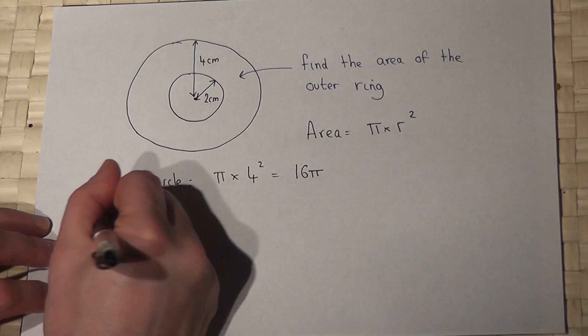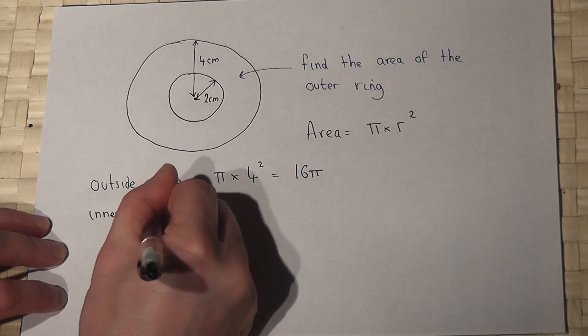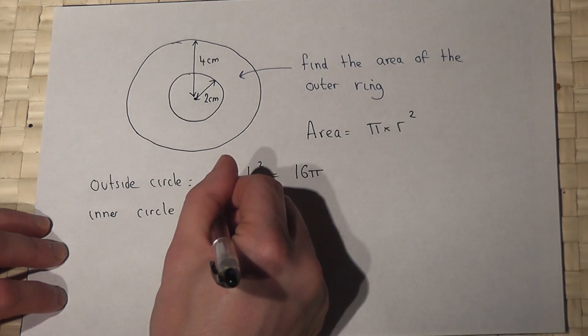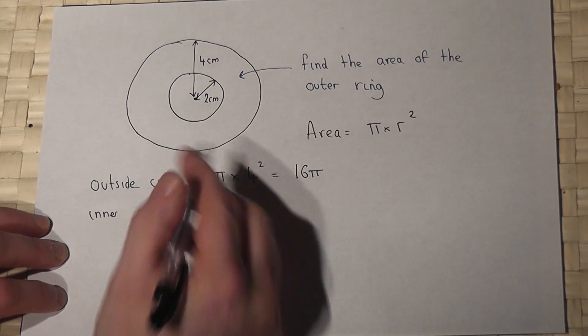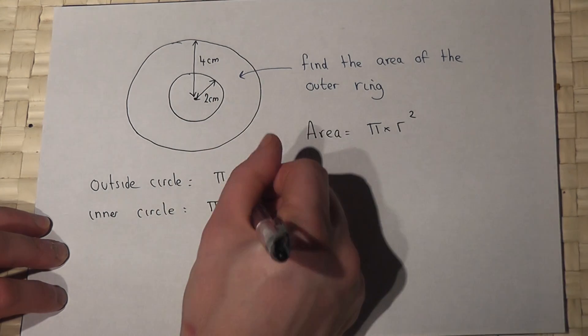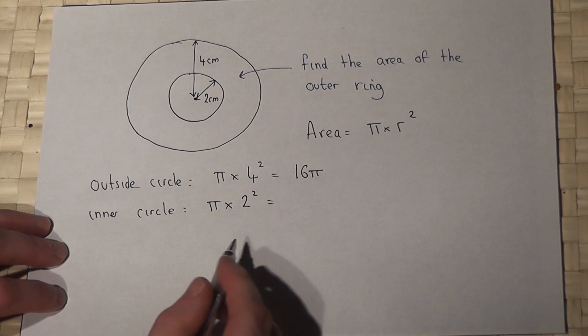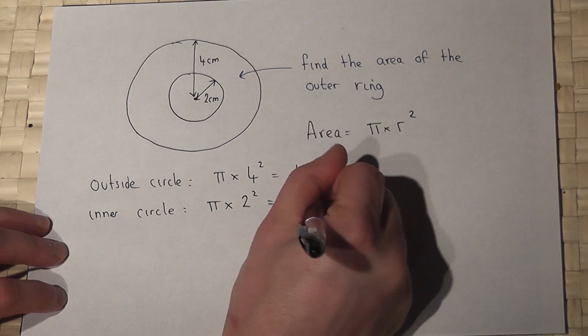Now the inner circle, which is smaller, that will be pi times its radius squared, so pi times two squared. Well, two squared is four, so that's four pi.